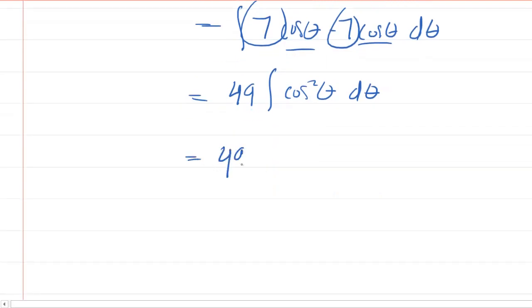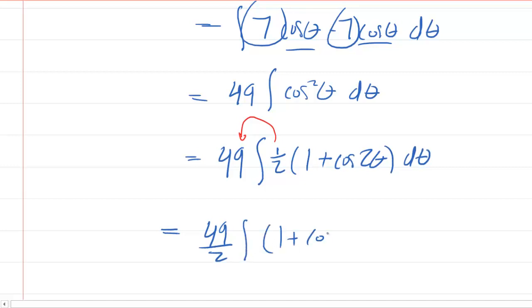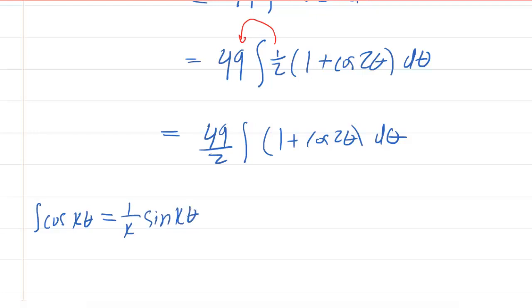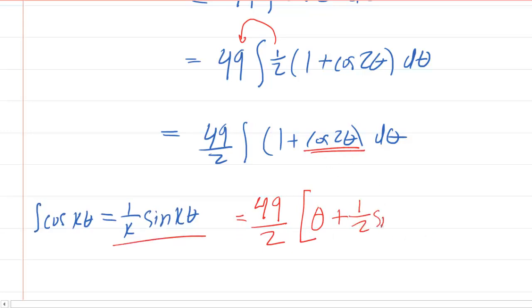To integrate cosine squared, we need to use another identity: one half times 1 plus cosine 2 theta. It's a very common trig identity. Factor out the one half. Forty-nine times one half is 49 over 2. We have the integral of 1 plus cos 2 theta d theta. We can finally integrate this. The integral of cosine k theta equals 1 over k times sine k theta—a useful integration rule that can be derived using u-substitution. We have 49 over 2 times the integral: the integral of 1 with respect to theta is theta, plus the integral of cos 2 theta is one half sine 2 theta, plus C.